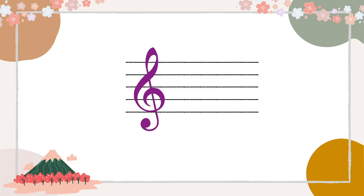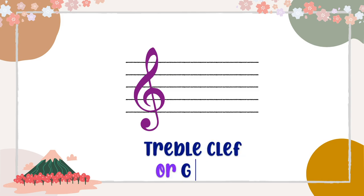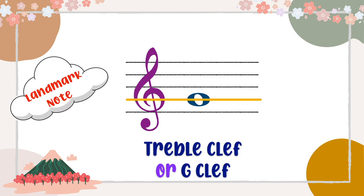This is the treble clef. The treble clef is also called the G clef because at the beginning of the curl in the design of the treble clef, it is always surrounded around line 2, which is the G note from middle C. The G note is also the landmark note for treble clef.